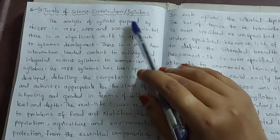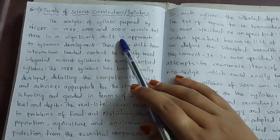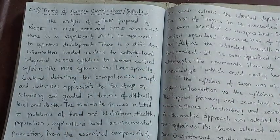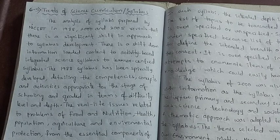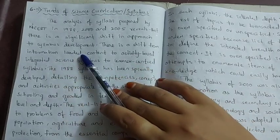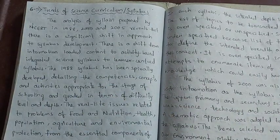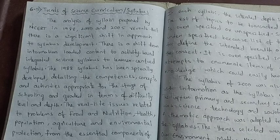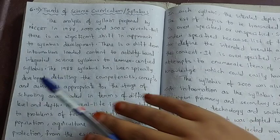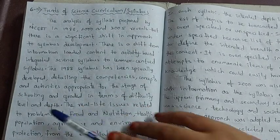The analysis of syllabi prepared by NCRT in 1988, 2000, and 2005 reveals that there is a significant shift in approach to syllabus development. In India, syllabus is developed by NCRT and SCRT. There is a notable shift from information-loaded content to activity-based integrated science syllabus, and then to a learner-centered syllabus.